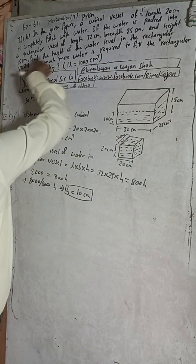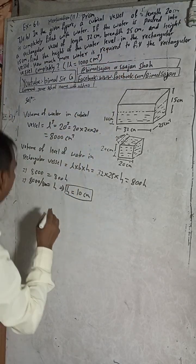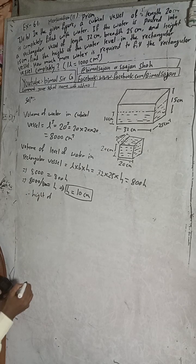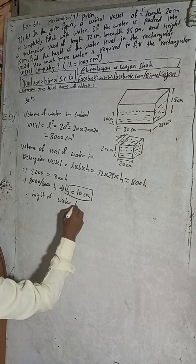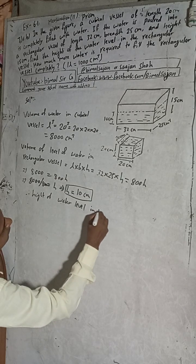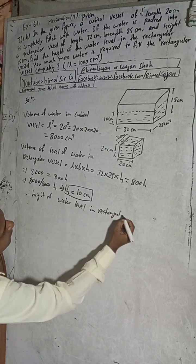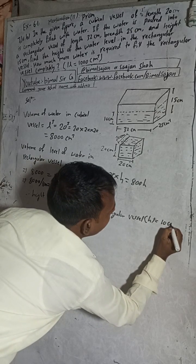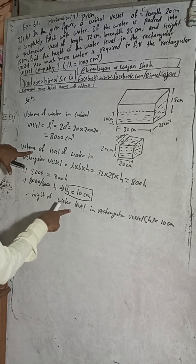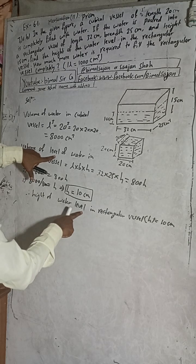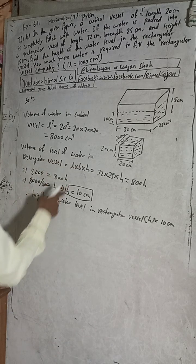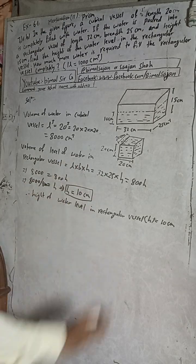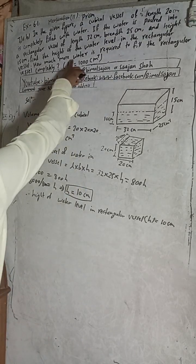We got the height. The height of the water level in the rectangular vessel is 10 cm. We can also write: volume of water level in rectangular vessel. Both phrasings mean the same thing.